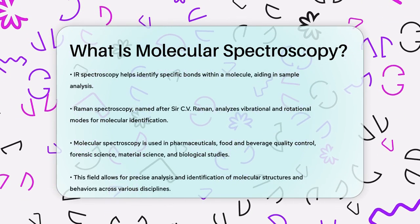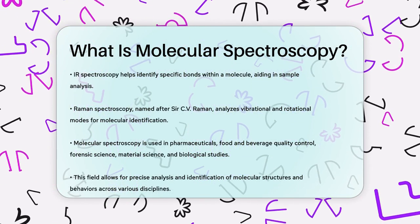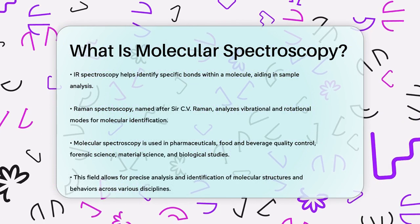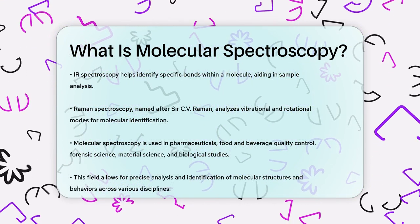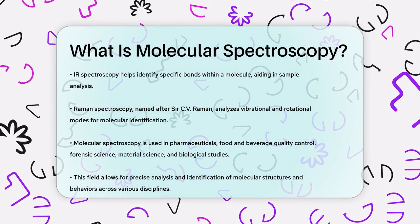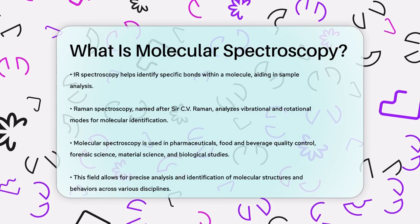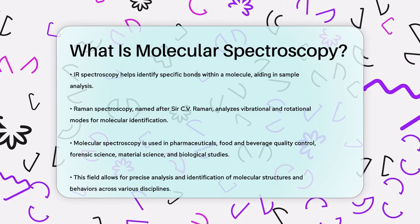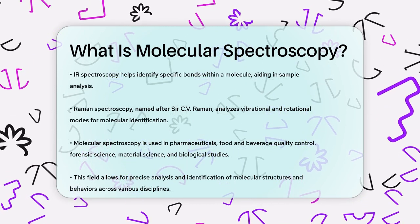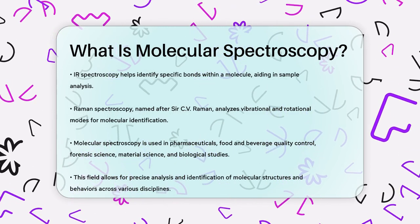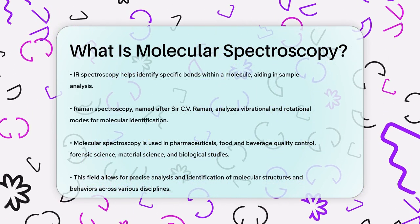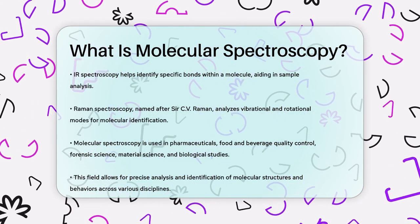Molecular spectroscopy has a wide range of applications, from analyzing the quality and quantity of chemicals in pharmaceuticals to monitoring the consistency of food and beverage products. It's also crucial in forensic science, material science, and even in the study of biological molecules. In essence, molecular spectroscopy is a powerful tool that helps us understand the intricate details of molecular structure and behavior, allowing us to make precise analyses and identifications in various fields.